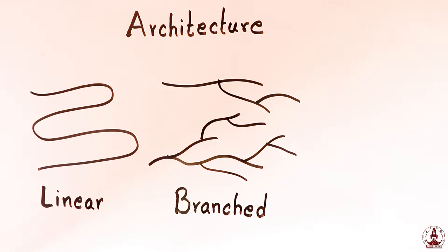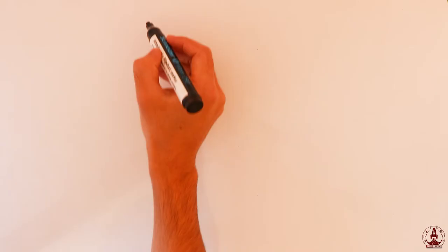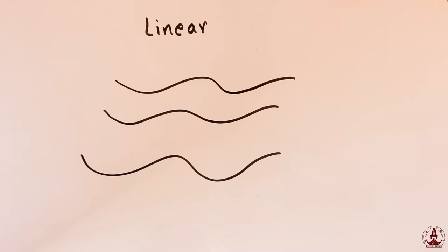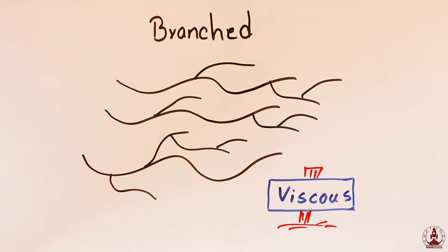Let's get back to our picture on the architecture of polymer. For example, if you have a polymer made of the same material but one is linear and another is branched, the branched one is more viscous. It means you can make your material more viscous by branching the linear chain of polymer.